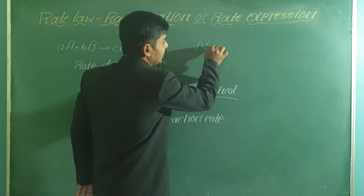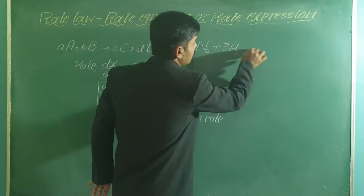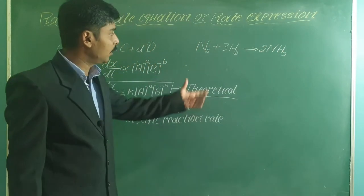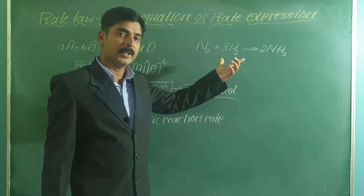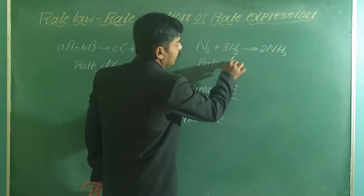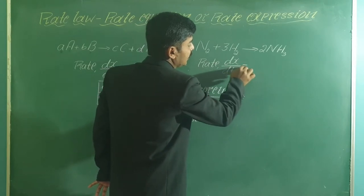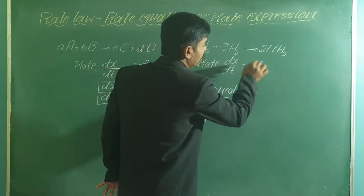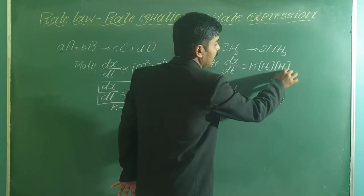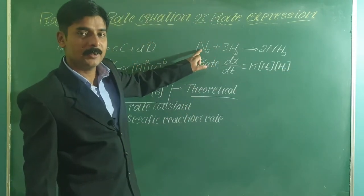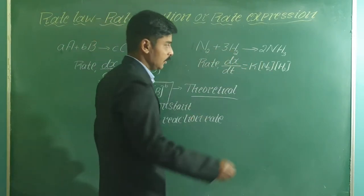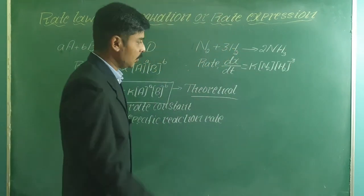For example, consider the reaction N2 + 3H2 → 2NH3. Applying the law of mass action, the theoretical rate expression is: rate = K × [N2]^1 × [H2]^3, since the stoichiometric coefficient of N2 is 1 and that of H2 is 3.